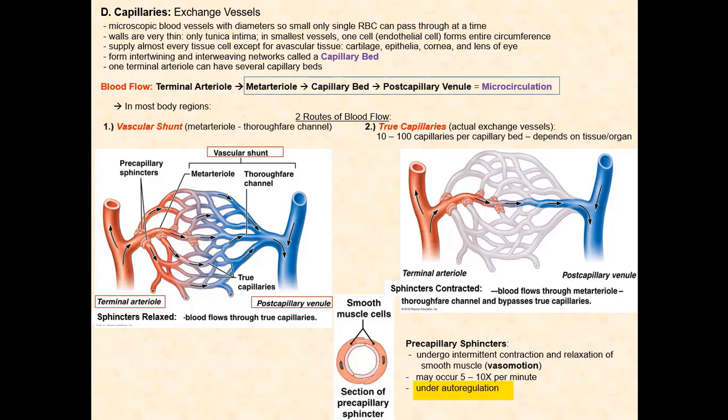For example, the higher the concentration of waste products produced by tissue cells that are metabolically active, the longer and more frequent these pre-capillary sphincters will relax, which dilates the lumen, allowing blood to travel through the true capillaries to deliver nutrients and pick up wastes. The more metabolically active the tissue, the more extensive and numerous the capillary beds. Examples of highly metabolically active tissues are the brain, the lungs, the liver, the kidneys, the skeletal muscle, and cardiac muscle. More details come later when we further discuss the arterioles and their influence on blood flow into the capillary bed.